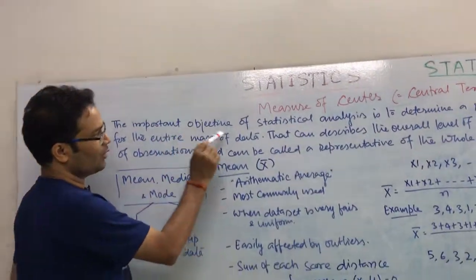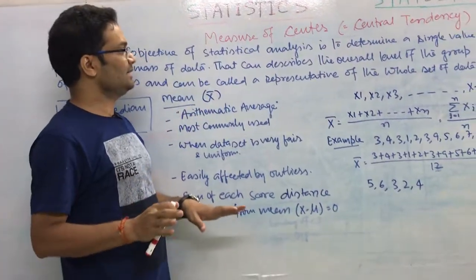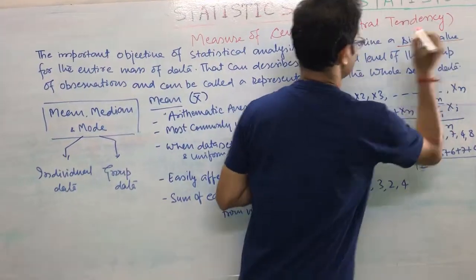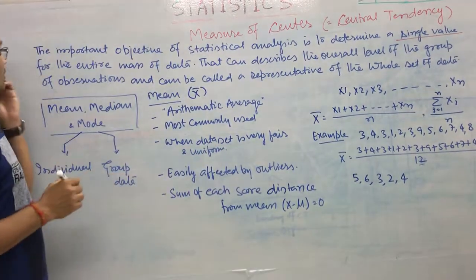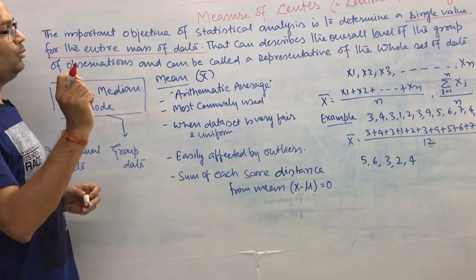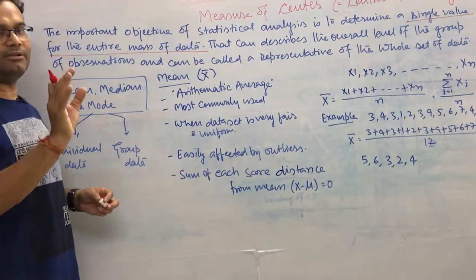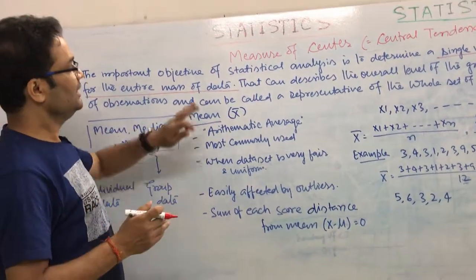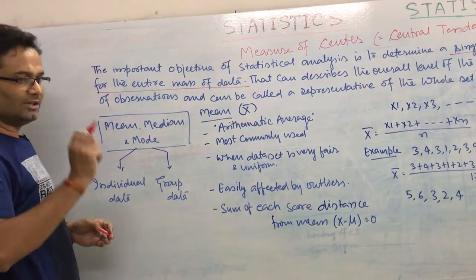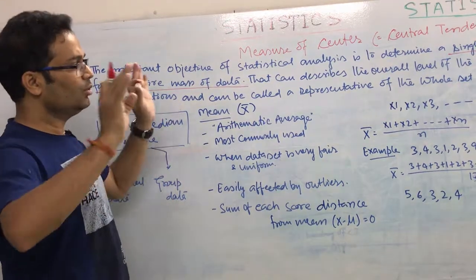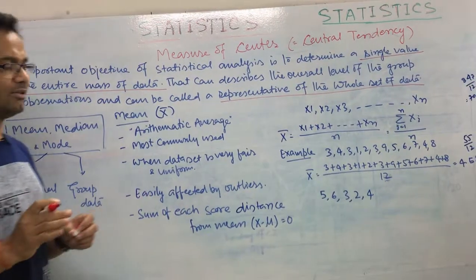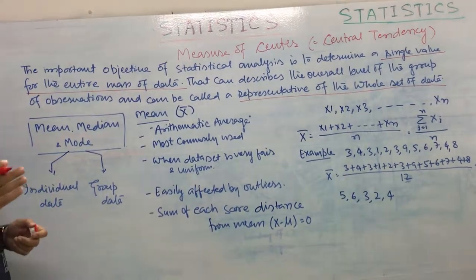So the important objective of any statistical analytics is to determine a single value for the entire data set. If in any way you can get a single value for the entire data set, that is called the measure of center or central tendency — that number represents the whole data, meaning it is a representation of the whole set of data.